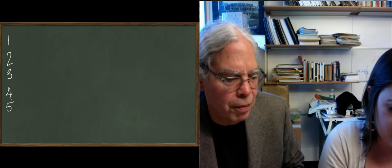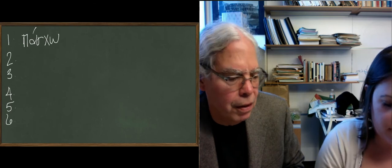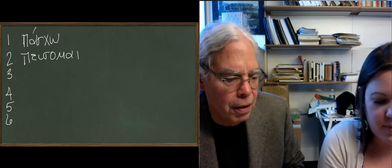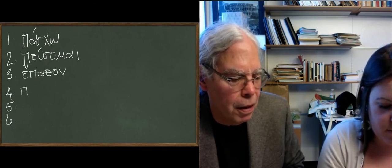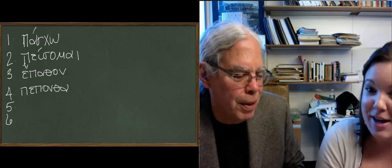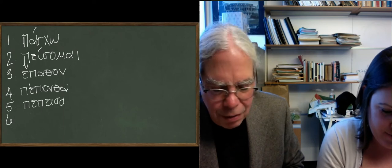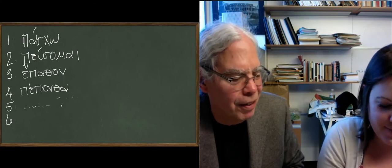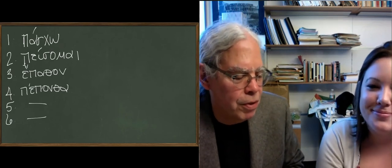So it means suffer. The future, get a load of this, is pesemai. I'll explain these in a second. And then the aorist, the second aorist is epathon, and then pepontha. There isn't any perfect middle or passive. Forget about it. So no fifth or sixth. The reason that there's no five or six is important. Notice this is a verb with a middle future, pesemai, as well as a second aorist.